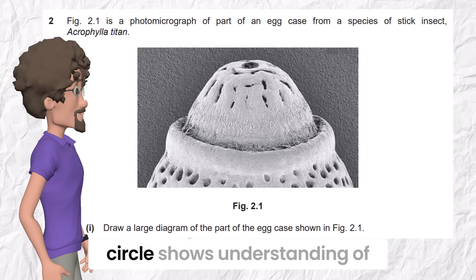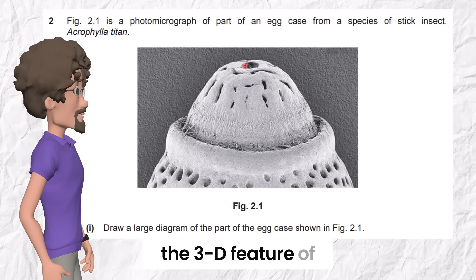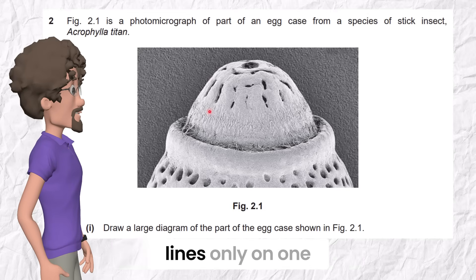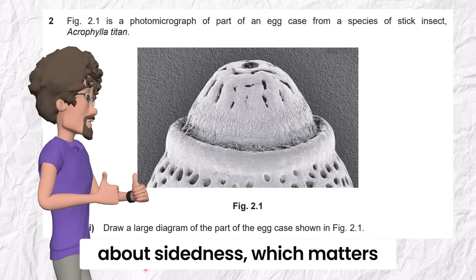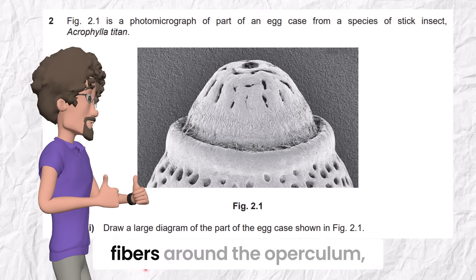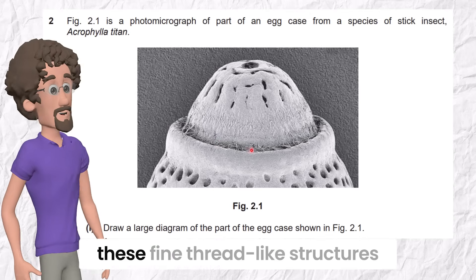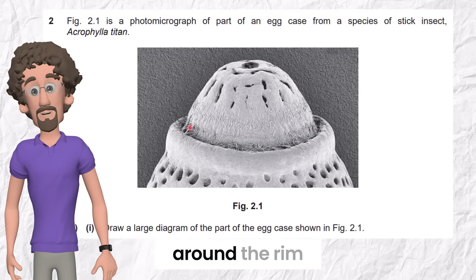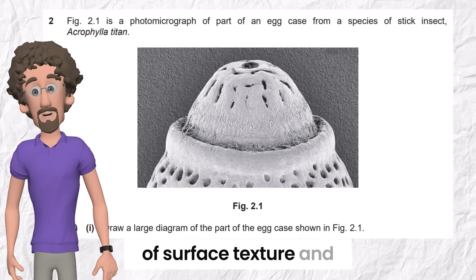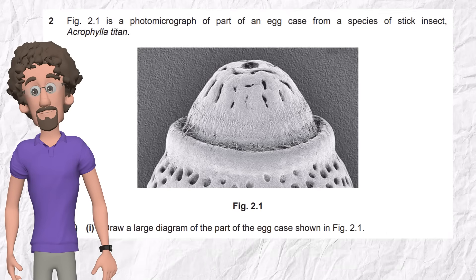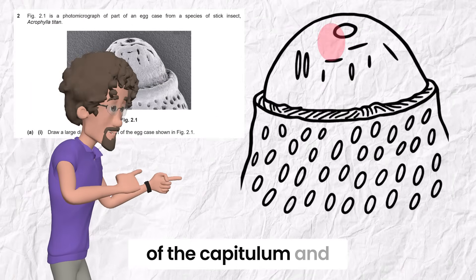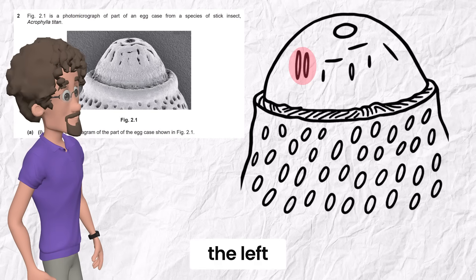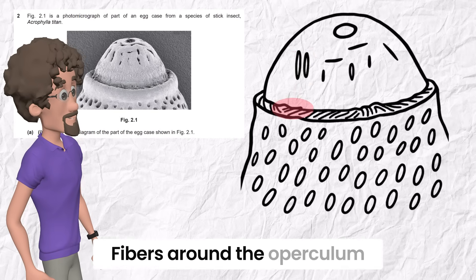Do you know why the mark scheme mentions it as an important detail? Drawing the central dark circle shows understanding of the 3D feature of the egg case, and drawing the two parallel lines only on one side tests your awareness about sidedness, which matters in biology. The second detail is fibers around the operculum, these fine thread-like structures around the rim. Observing them shows awareness of surface texture and tests if the student can see that not all surfaces are smooth. So our drawing is like that. Detail 1: One circle on top of the capitulum and two parallel lines on the left. Detail 2: Fibers around the operculum.